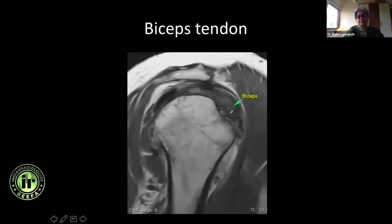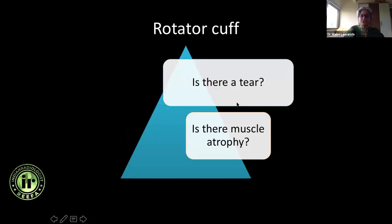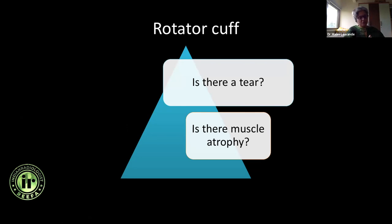Always look at the biceps tendon — is it enlarged, tendinotic, or is there no significant healthy remnant at all? It may be a chronic tear with nothing remaining. You need to mention this. Now that there is a tear and you have described all the sizes, what are the other things the surgeon needs to decide? It's not enough to just say there's a tear — you're not wrong, but are you helping the surgeon? Maybe not.